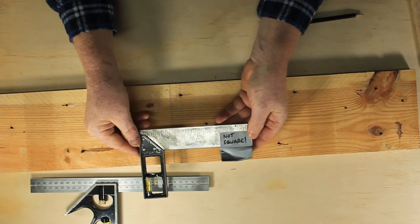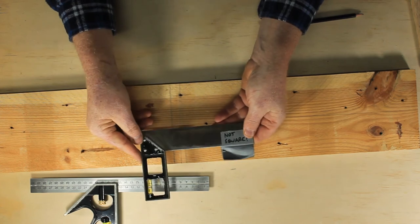This square can probably be fixed by removing these rivets and putting them back in again with the square accurate.